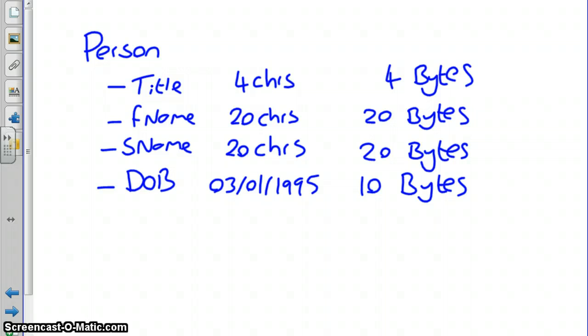So if that is our full information that we want to store of a person, for this example, the total bytes would be 54 bytes per record.